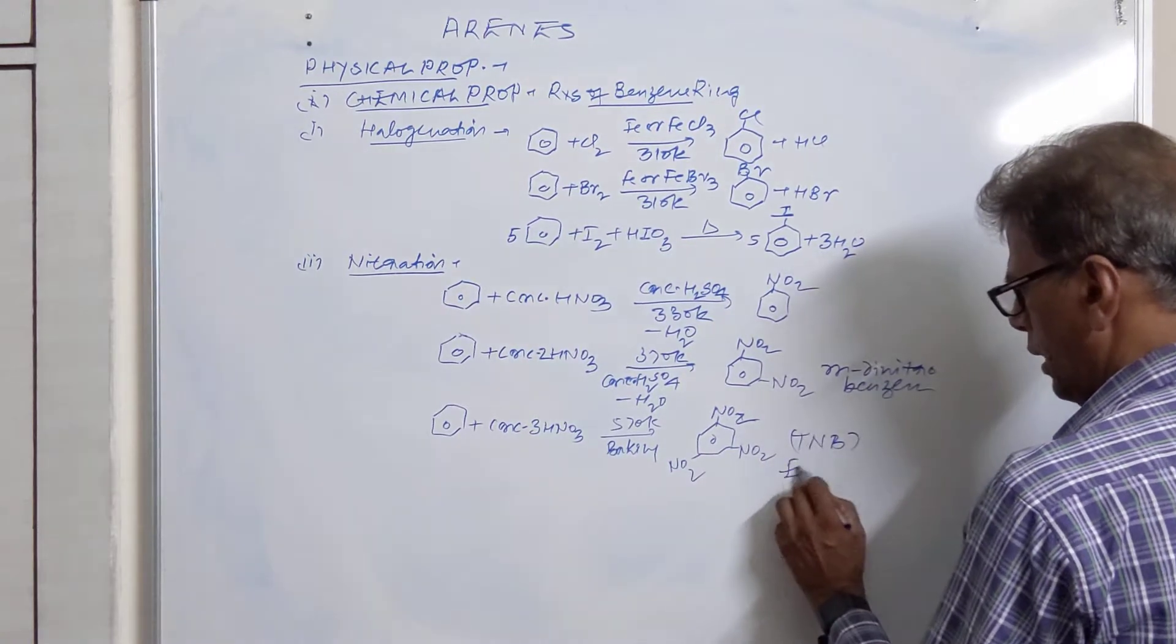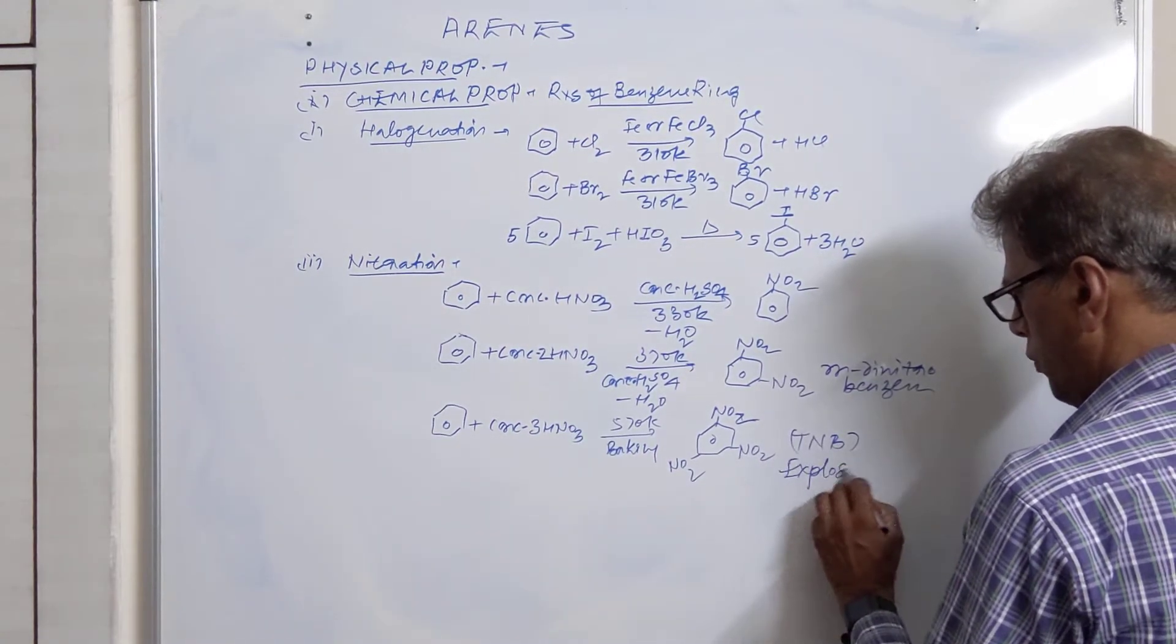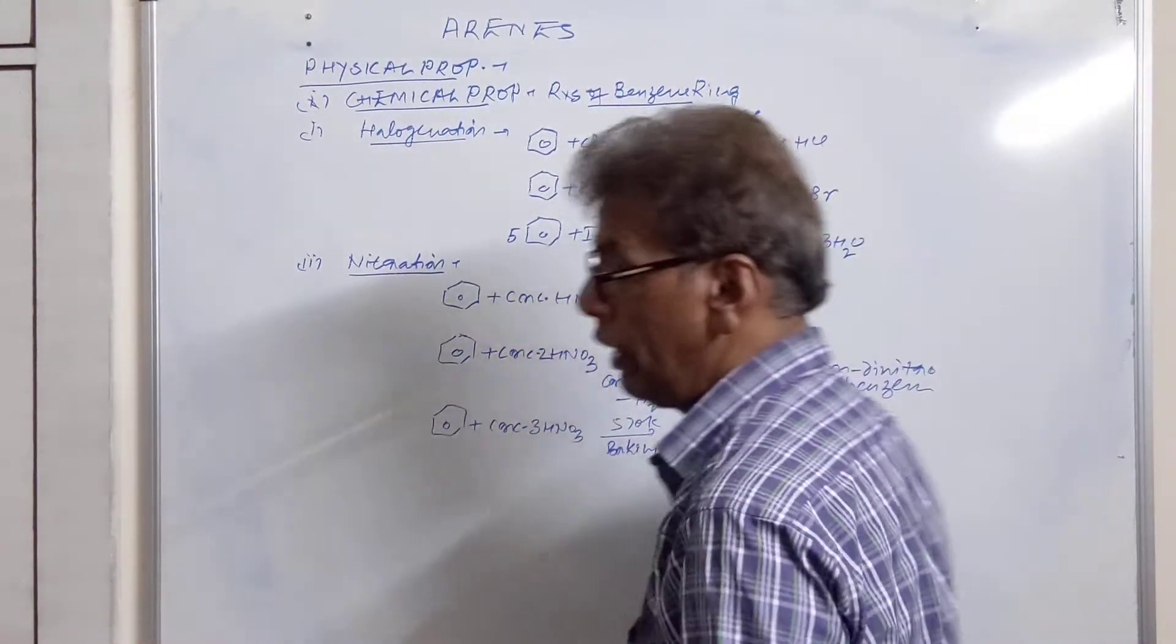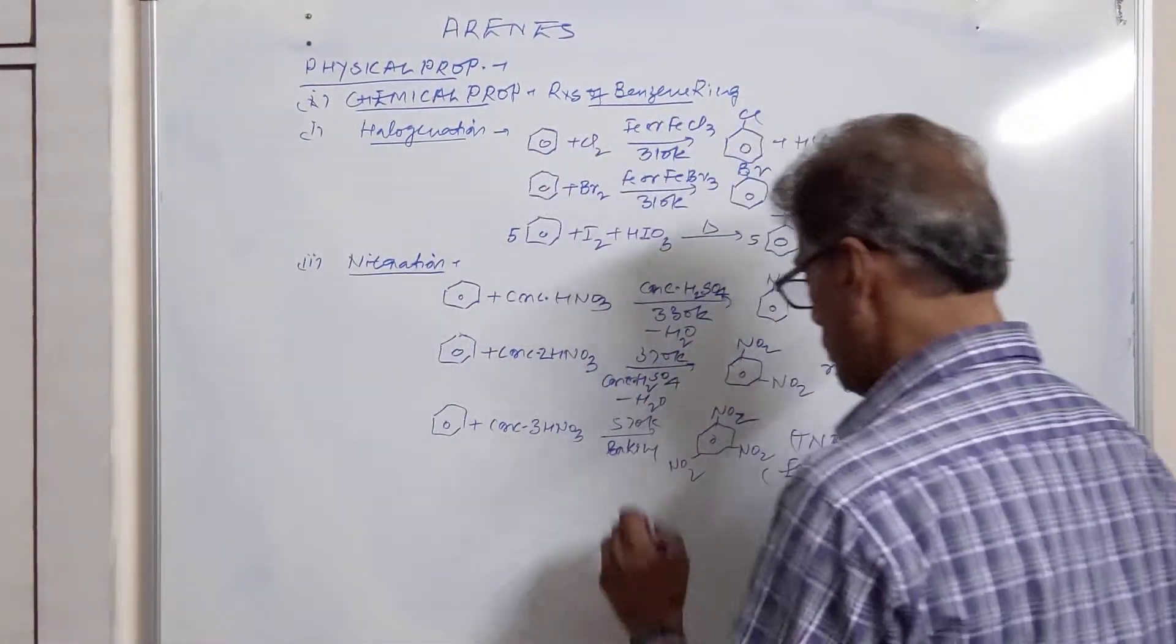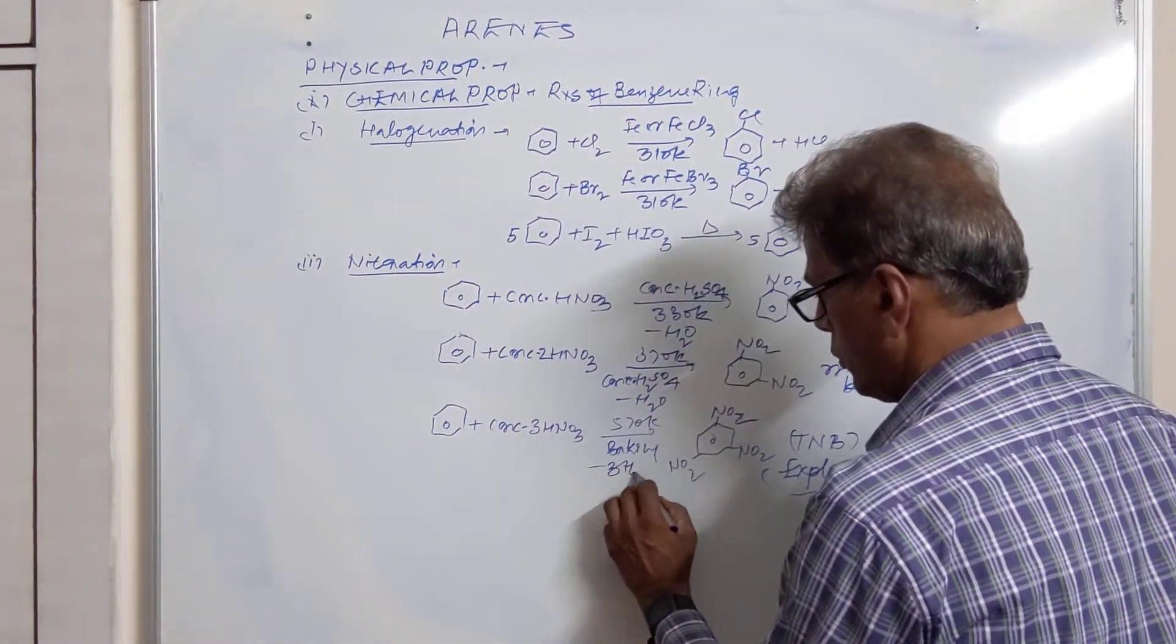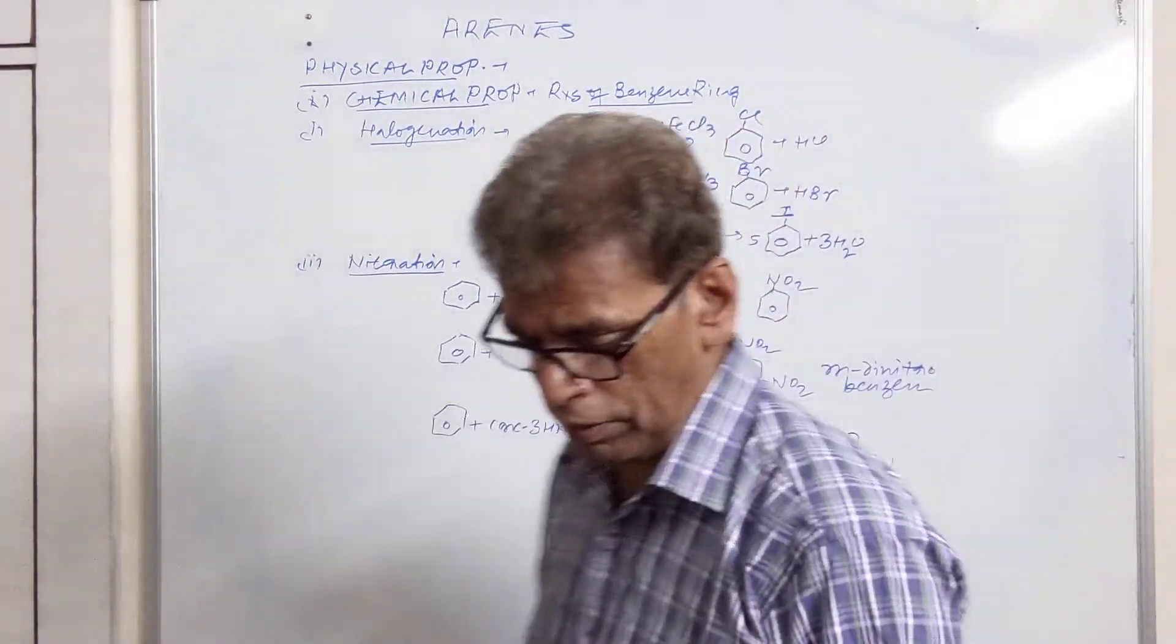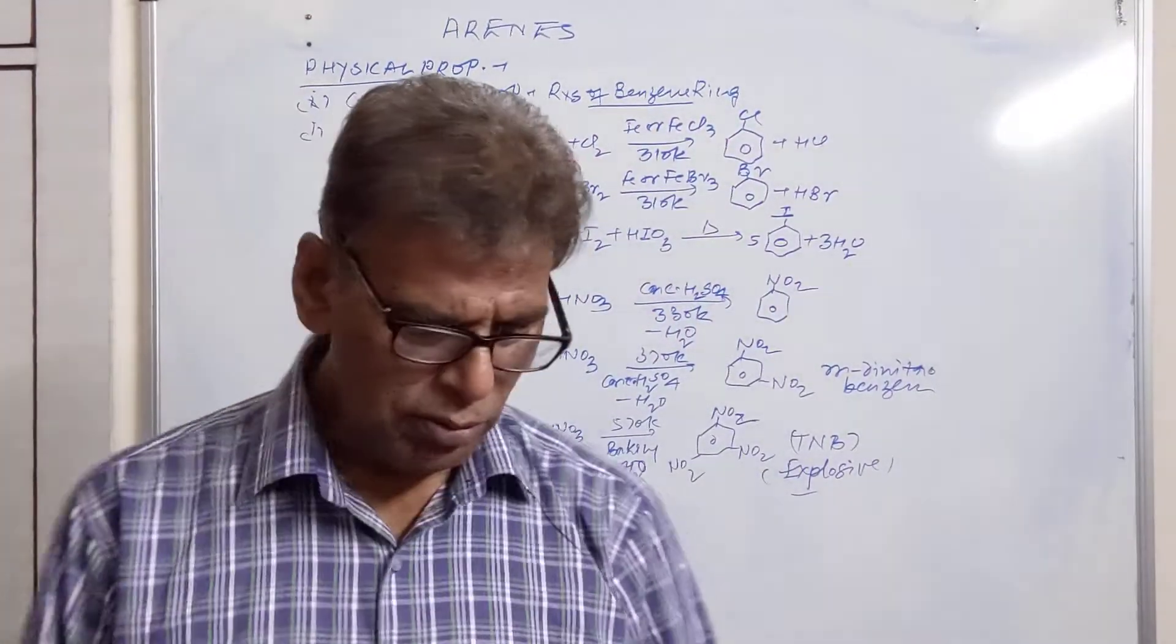It is used as explosive. Trinitrobenzene is highly dangerous compound. It causes explosion by taking small amount of energy.